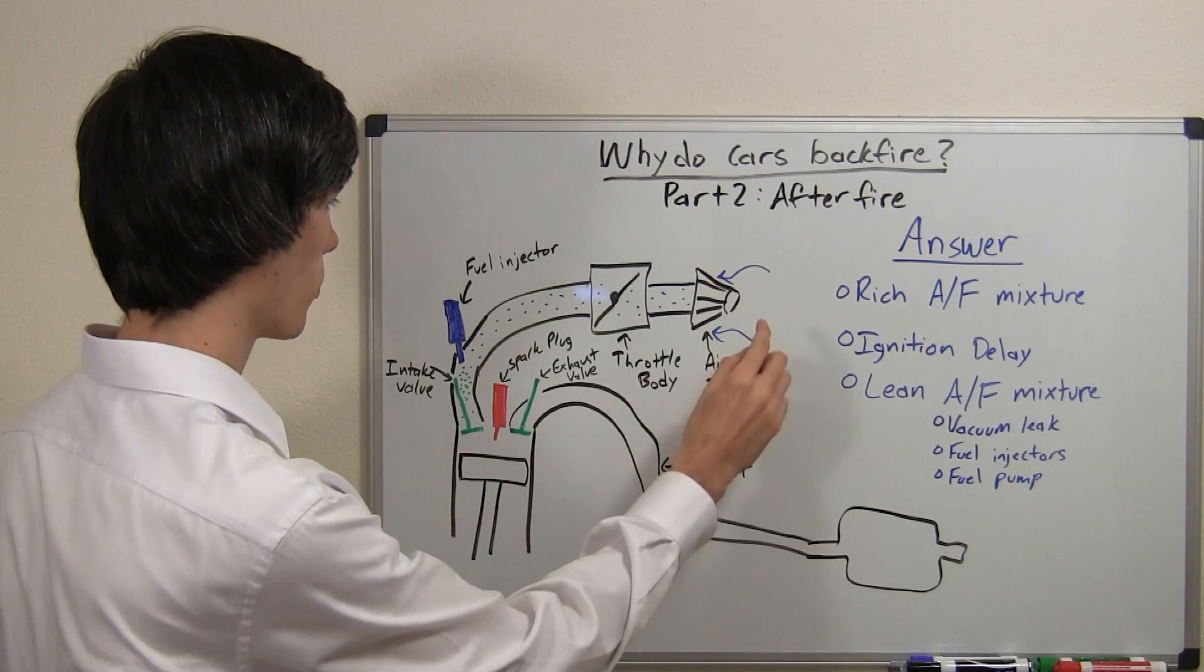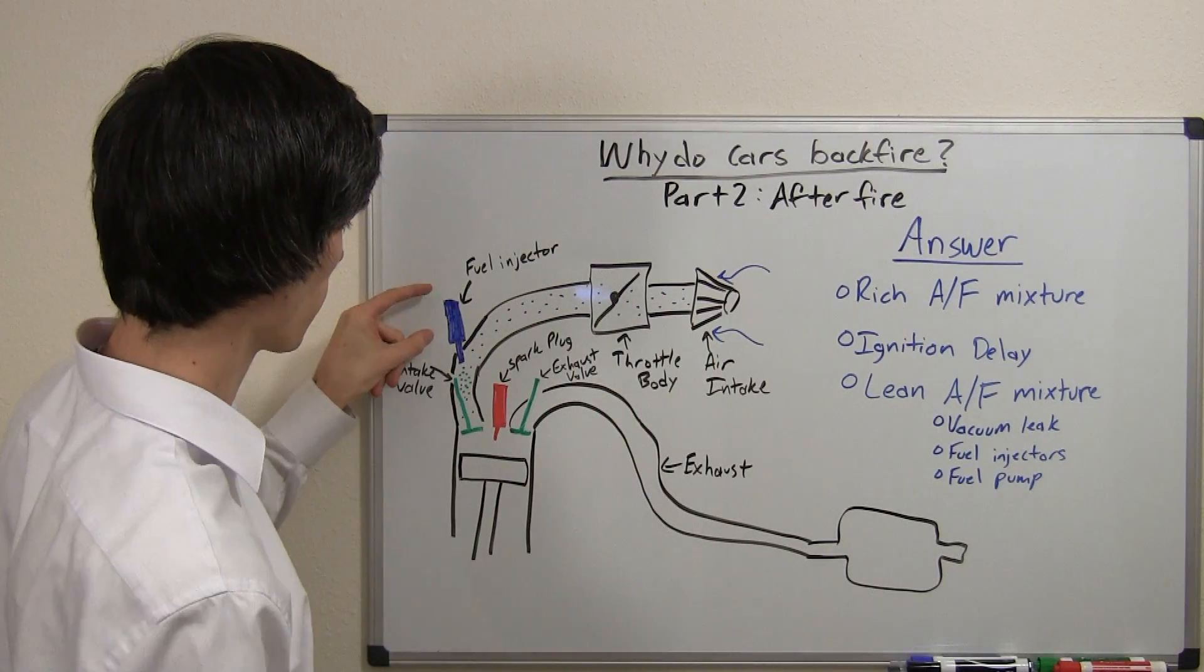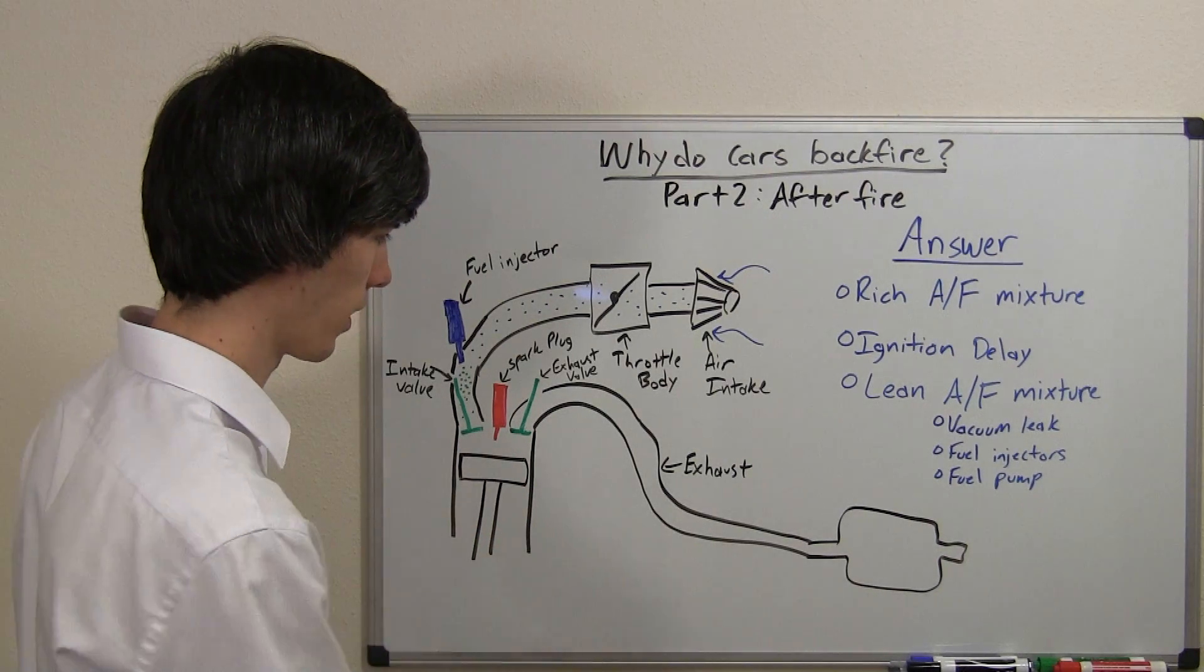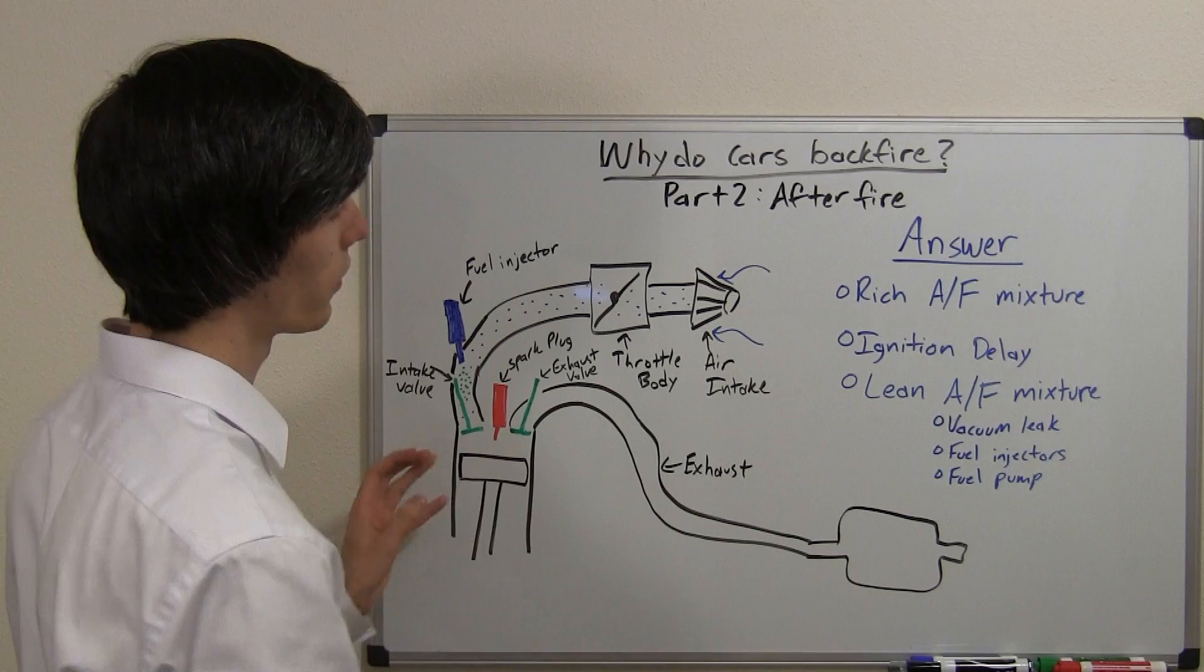So here we've got our setup: we've got our air intake, our throttle body, we've got air coming in, we've got our port fuel injection, we've got our intake and exhaust valves, our spark plug and our piston cylinder device. Here's our exhaust and so our first answer,